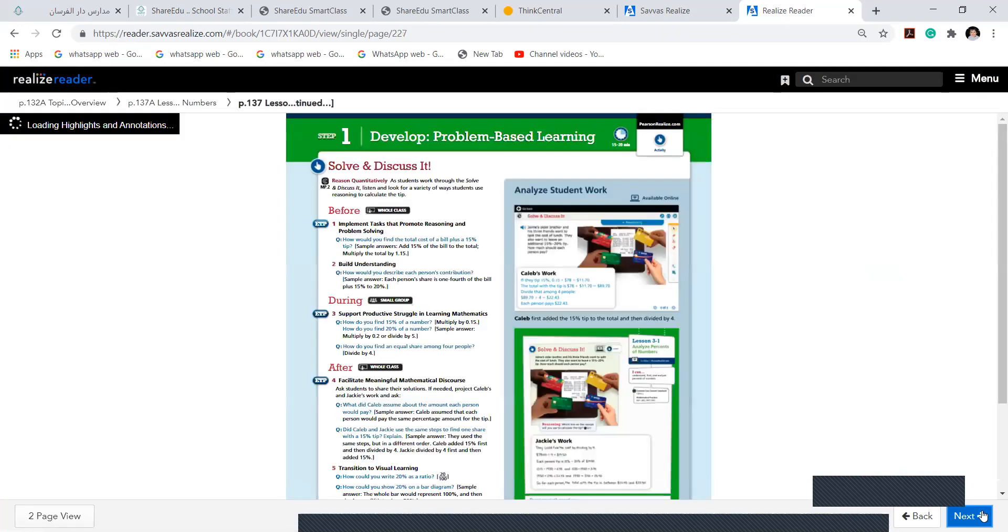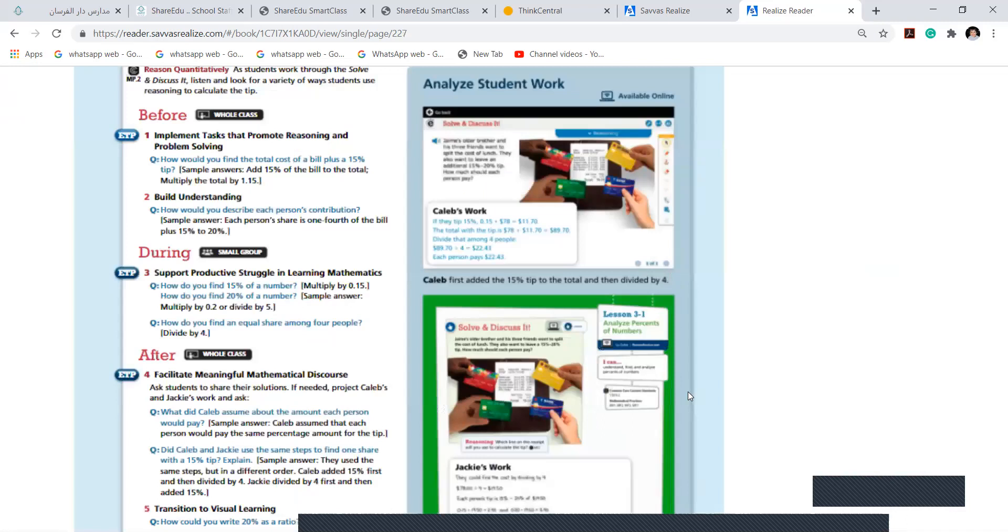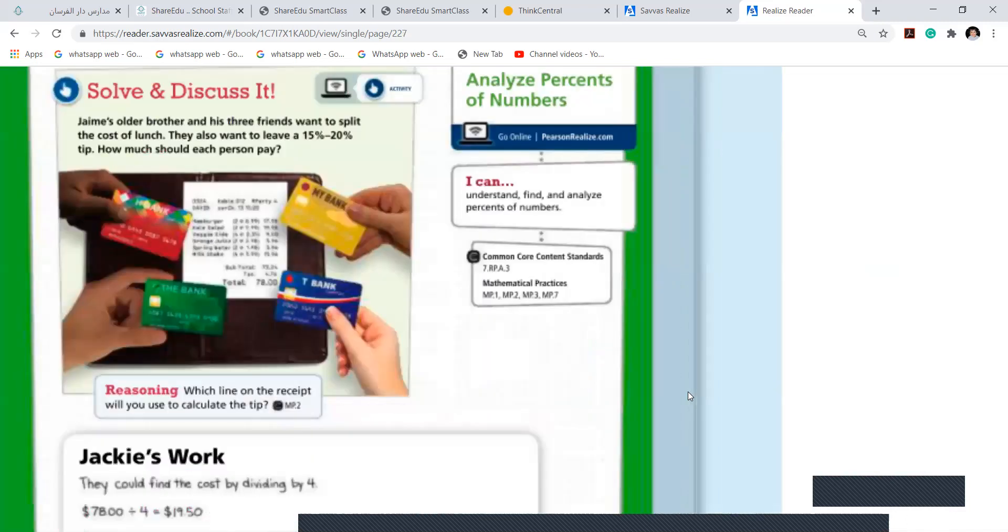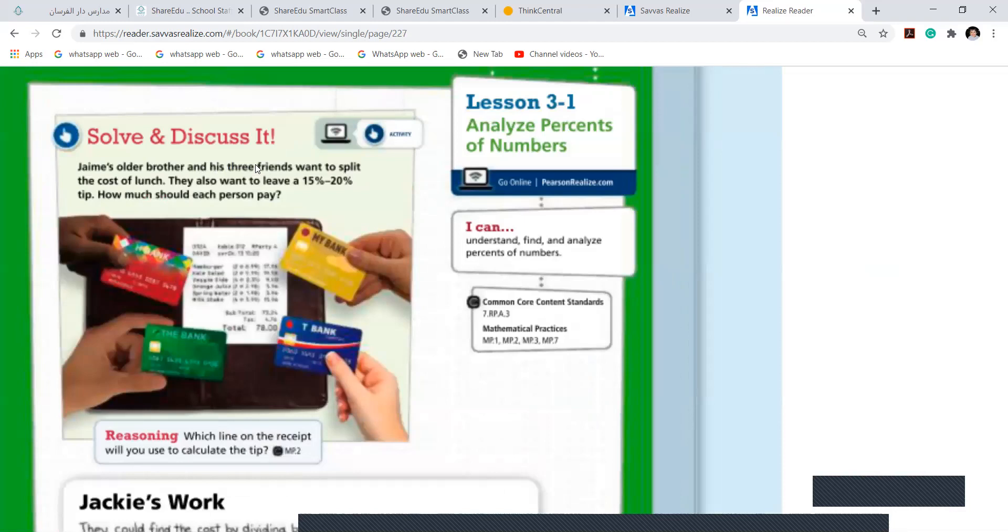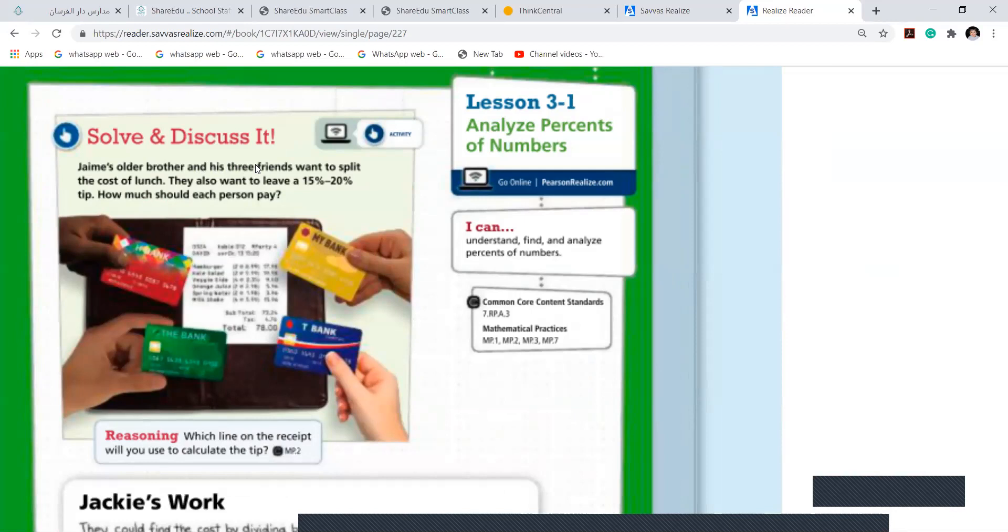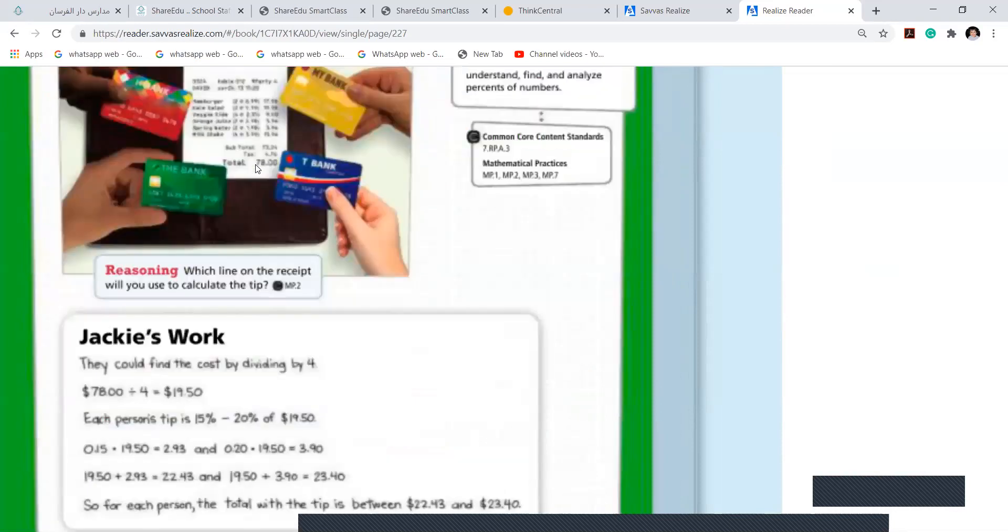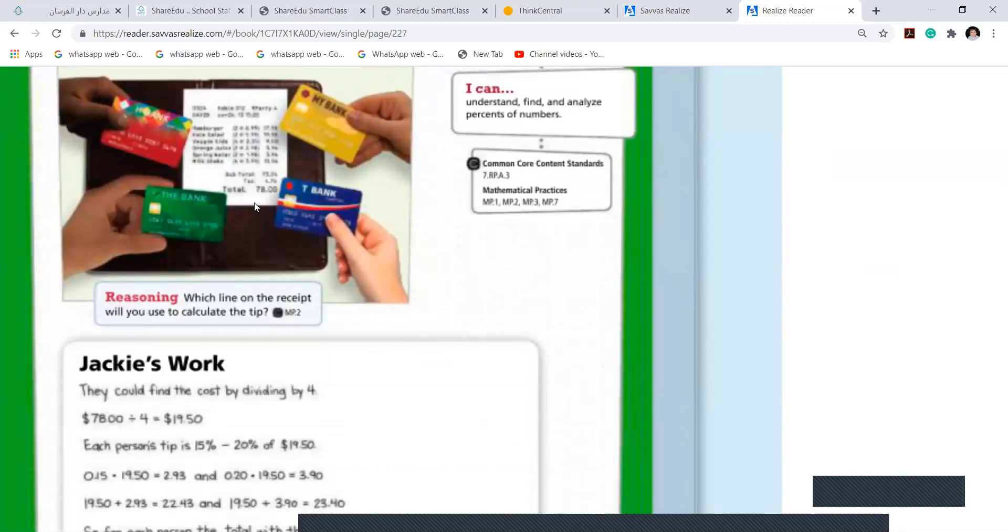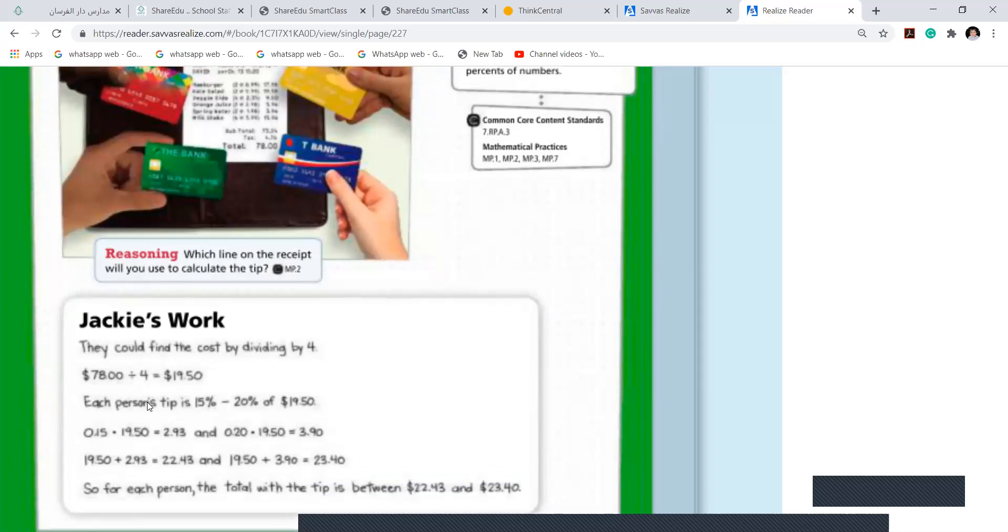Now turn to page number and leave the first page of that. Like Jamie's older brother and his 3 friends want to split the cost of lunch. Maybe you and your friends went out for a lunch and you want to split the cost. They also want to leave a 15 to 20% tip. They have shown you that total is like $78. So they will divide, including the tax and everything. They divide into four because there are four friends there.